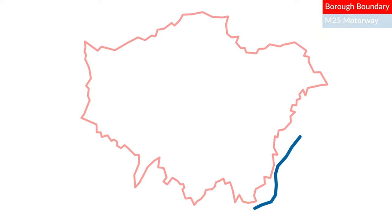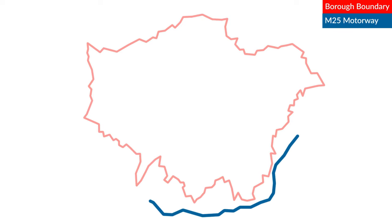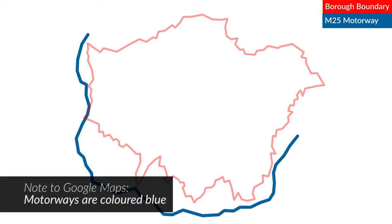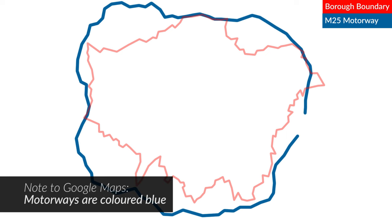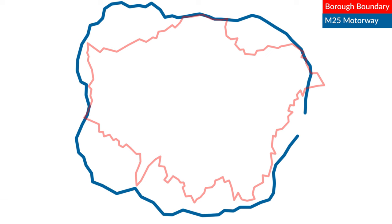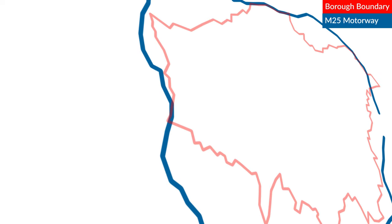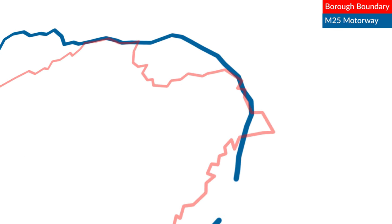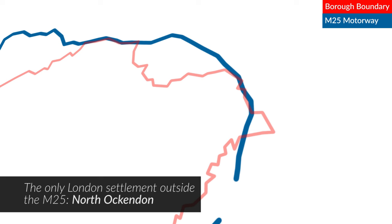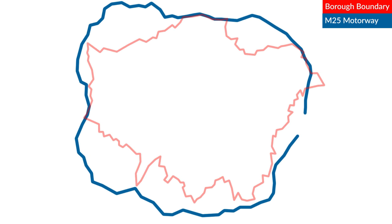However, since its construction, and to many of those who live outside it, it's sometimes considered that you are in London if you're inside the boundary of the M25 motorway. Although did you know that there's a tiny part here by Heathrow, and quite a large chunk in the borough of Havering here, where the London borough boundary actually goes outside of the orbital motorway.